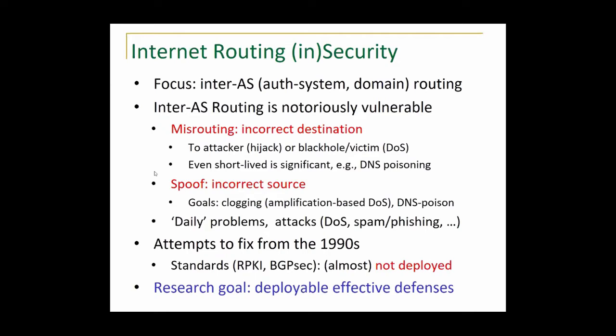The other category of routing problems involves incorrect source — sending packets with an incorrect sender ID, pretending to be somebody else. The most common goal is amplification-based denial-of-service attacks. There is also the goal of protocol attacks where sending an incorrect source can be used to spoof, which is a main tool for DNS poisoning. Both of these are very common problems, exploited on a daily basis for denial-of-service, spam, phishing, and many other abuses. There has been a lot of awareness and many attempts to fix these problems since the 90s.